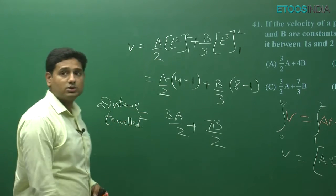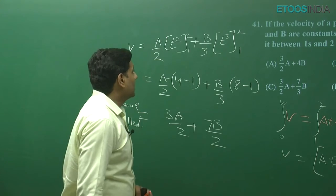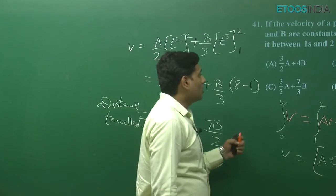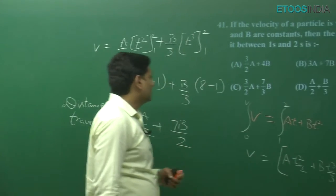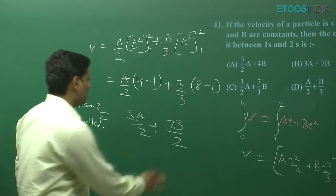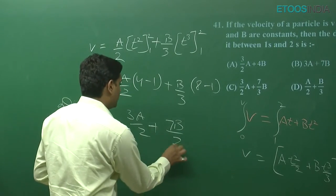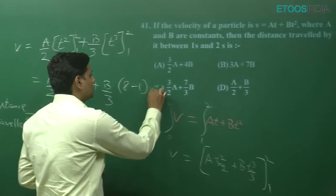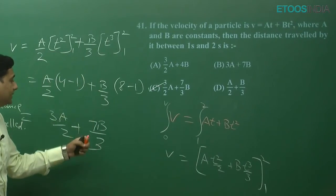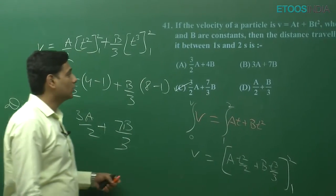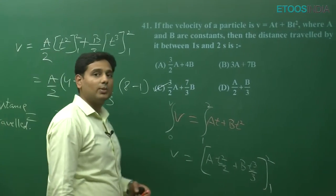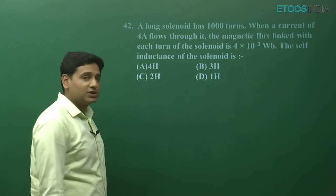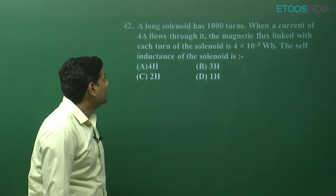Looking at the options, the correct option here is option C — 3a/2 + 7b/3. So option C is correct for question number 41.